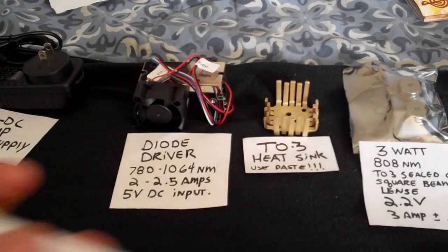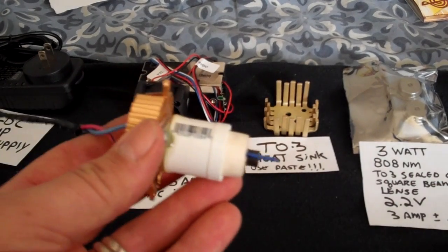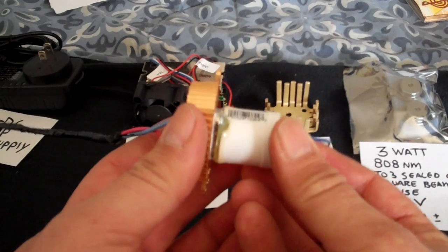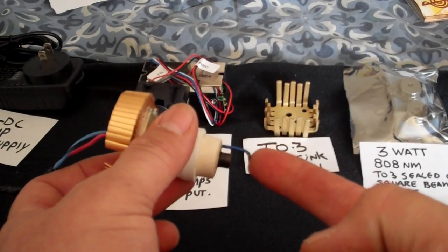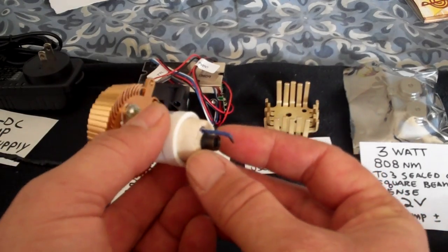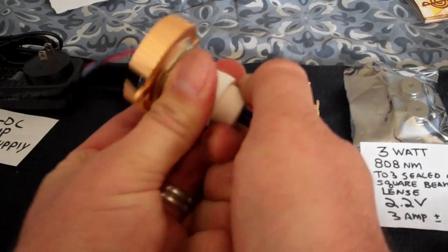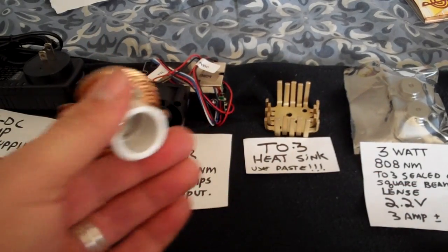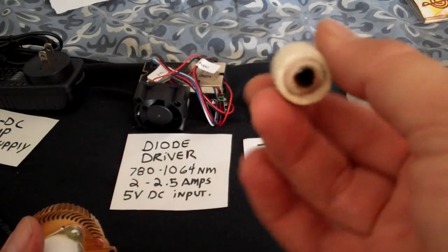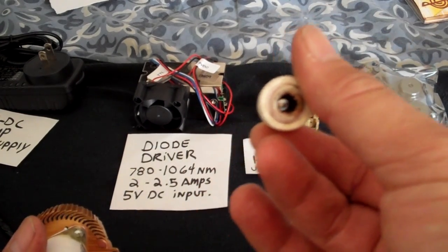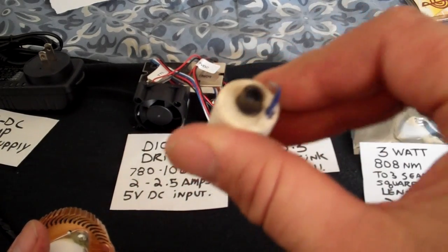This is what we're building. This is a 3 watt, 808 nanometer laser with a focal point set exactly to here, a culminating lens. Here is the diode itself. This is basically half inch PVC. Culminating lens is here and I used epoxy putty AB part mix to set it in here, center it exactly.